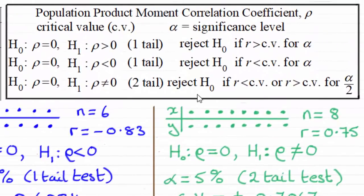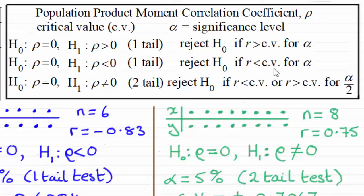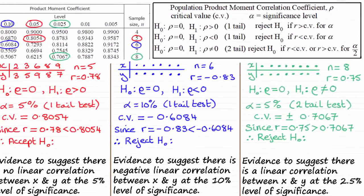To summarize the three examples: for the first test, testing rho greater than zero was a one-tailed test — reject H0 if R is greater than the critical value at significance level alpha. The second test, testing rho less than zero, was also a one-tailed test — reject H0 if R is less than the critical value. Finally, testing rho not equal to zero was a two-tailed test — reject H0 if R is less than or greater than the critical values for half the original significance level.